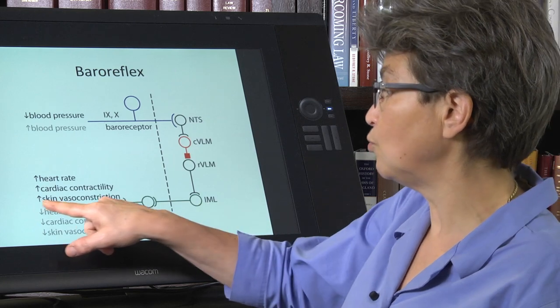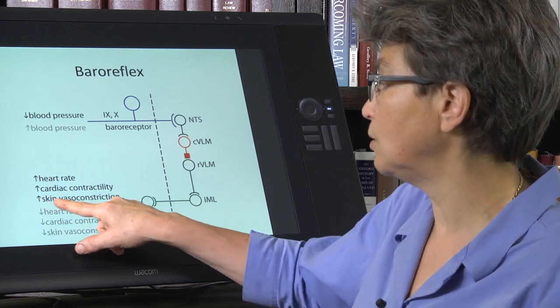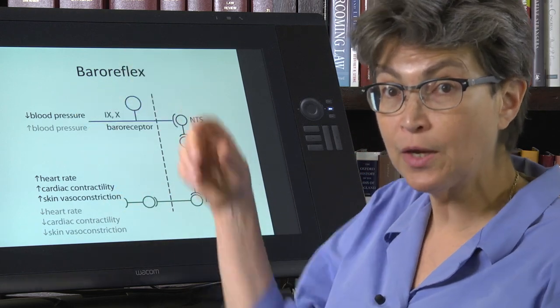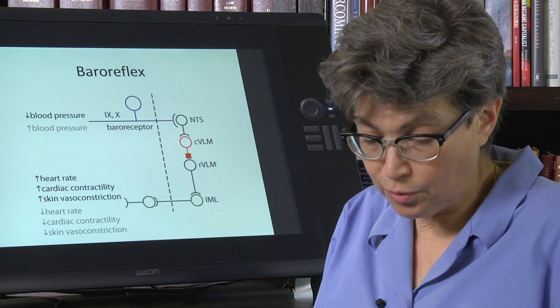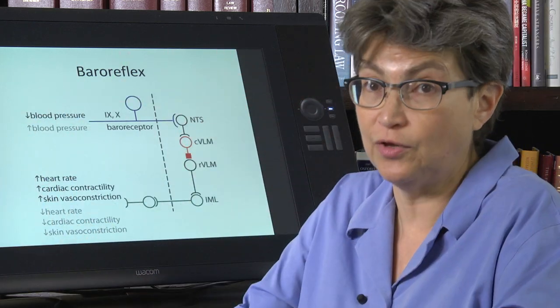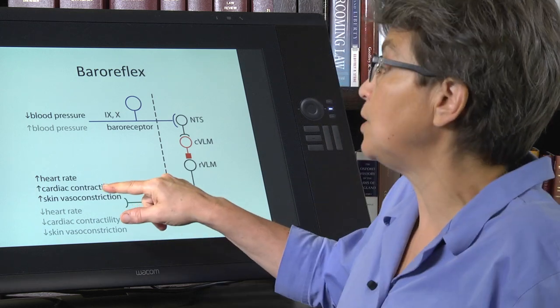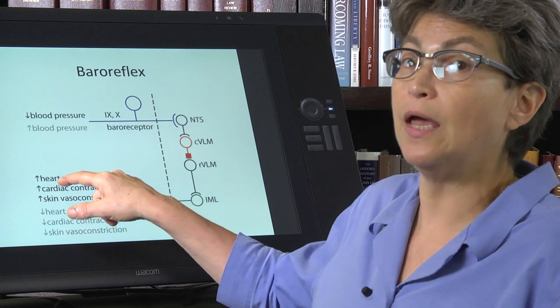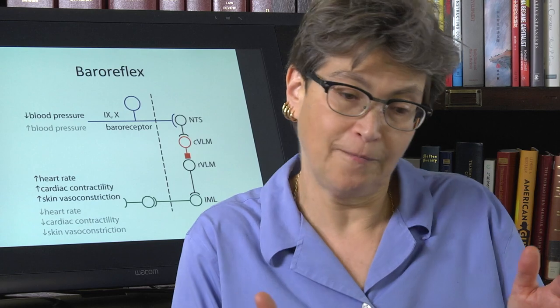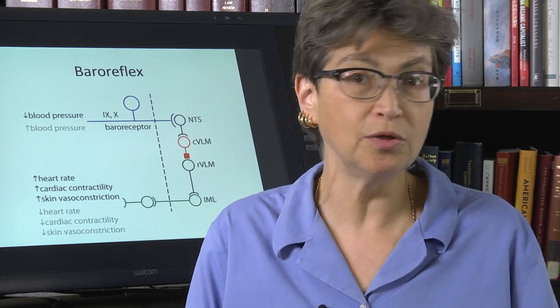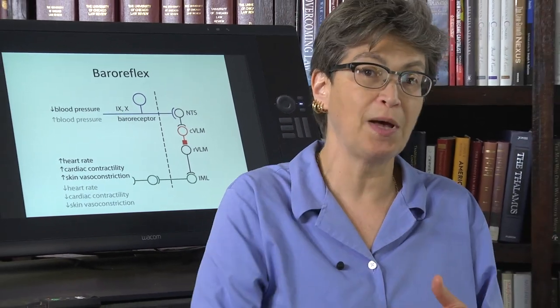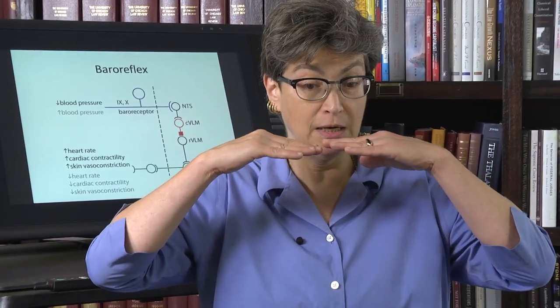So it's going to increase skin vasoconstriction in response to a decrease in blood pressure. So if there's a decrease in blood pressure, the vessels constrict that has the effect of increasing blood pressure. It also increases cardiac contractility and increases heart rate. And so this is a reflex. It involves smooth muscle instead of skeletal muscle, but it really is very similar. There's a change, and it's a response to keep things steady.